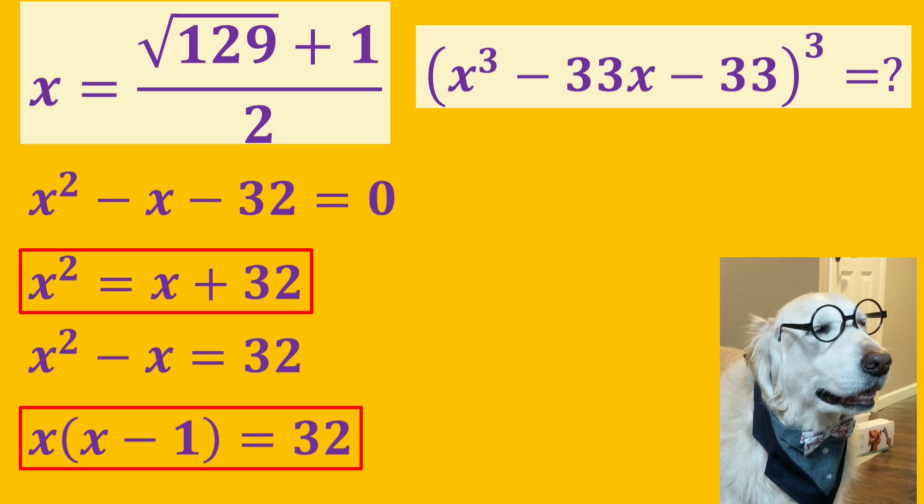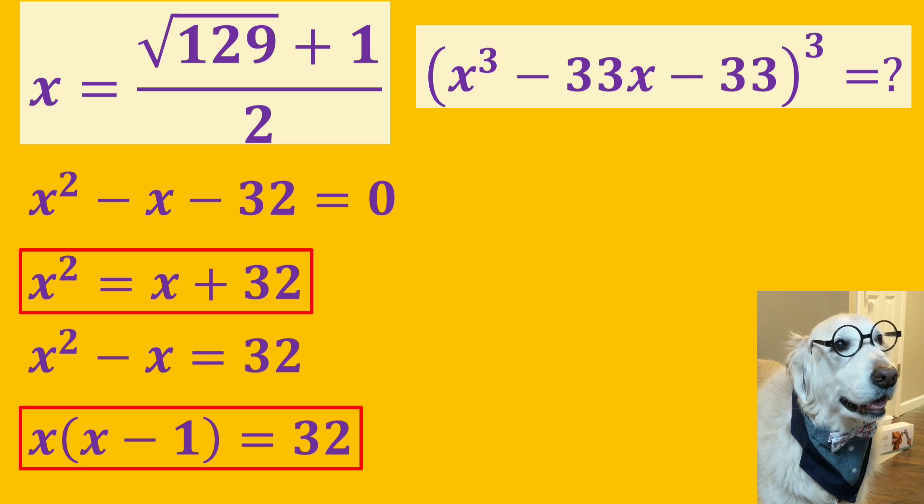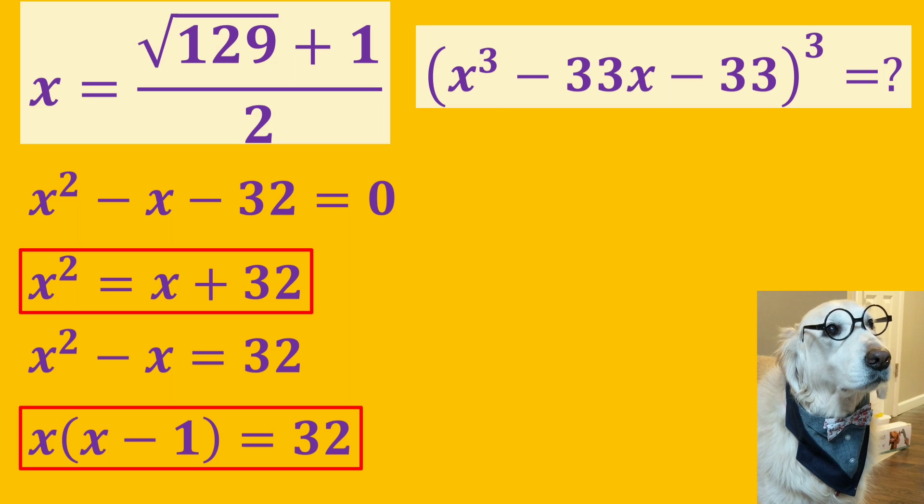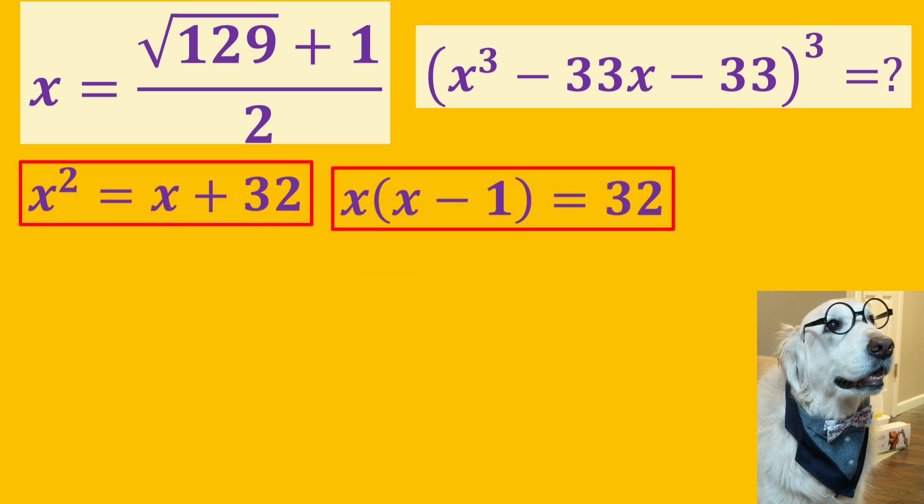And also, we can take just minus 32 to the other side and then factor out x. We will use both of them soon.